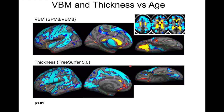In some ways, VBM and thickness are telling a similar thing. I mapped the VBM result onto the surface to compare vertex-for-vertex on the inflated surface between VBM and thickness. There are a lot of similarities — lots of blue, meaning tissue loss with age. But you can also see differences: thickness-based studies show a really prominent change in visual cortex that you don't see at all in the VBM study. VBM also has a large area in inferior frontal cortex going positive — getting more dense with age — which you see almost nothing of in the thickness-based study.